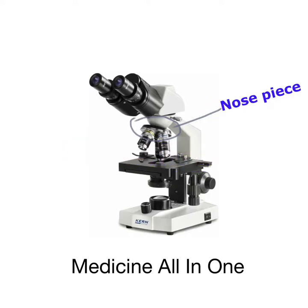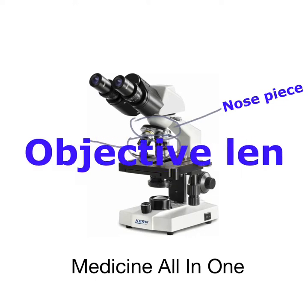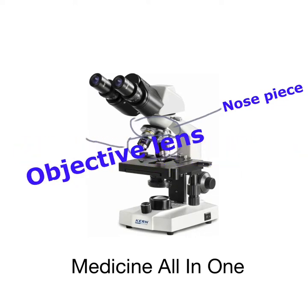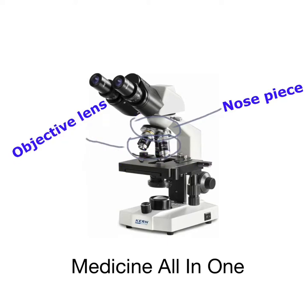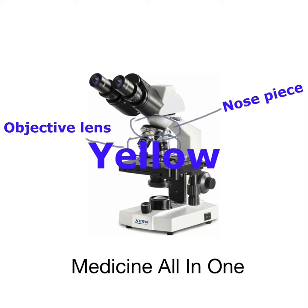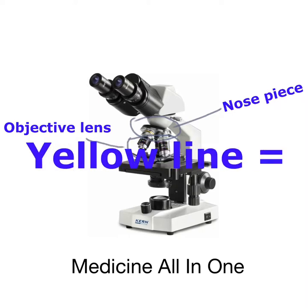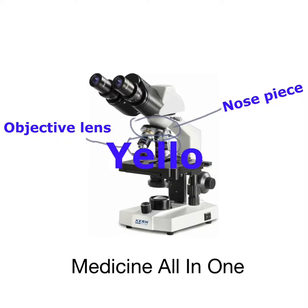Each objective lens is engraved with a different color line. The yellow line represents the dry low power lens with 10x magnification. The blue line represents 40x magnification power, whereas the white line represents the oil immersion high power lens with 100x magnification.